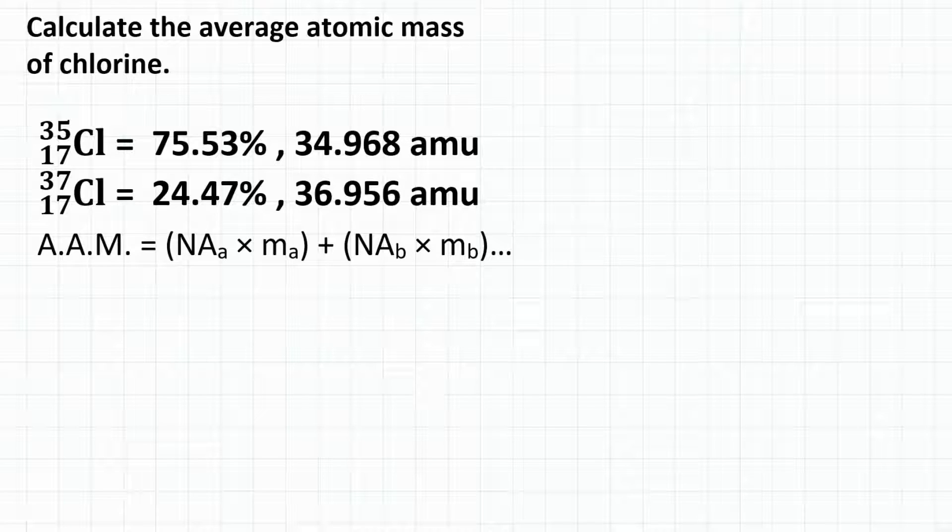So for average atomic mass, we need two things. We need the natural abundance, and the natural abundance is the percent of atoms of an element that are a specific isotope. So for instance,